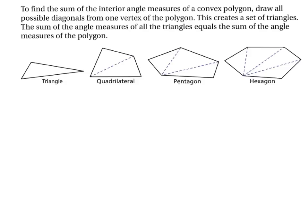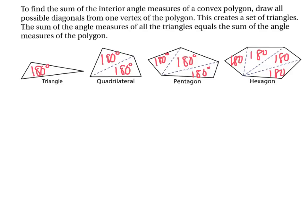We're going to draw all possible diagonals from one vertex of the polygon. This creates a set of triangles. We've taken a quadrilateral, a pentagon, and a hexagon and connected one vertex to all others to make diagonals — creating a set of triangles within each polygon. A triangle has 1 triangle giving 180°. A quadrilateral gives 180° × 2. A pentagon gives 180° × 3 since we have 3 triangles. A hexagon gives 180° × 4 since we have 4 triangles.